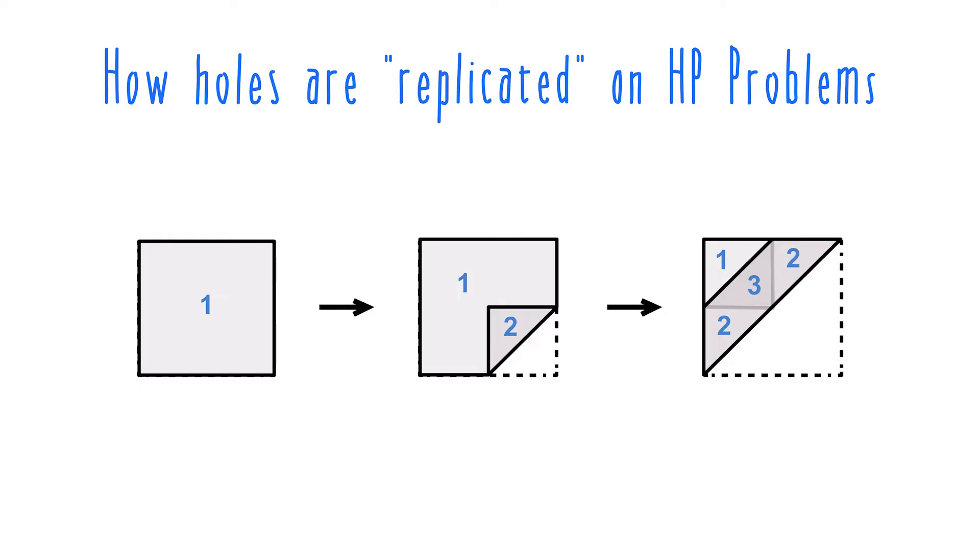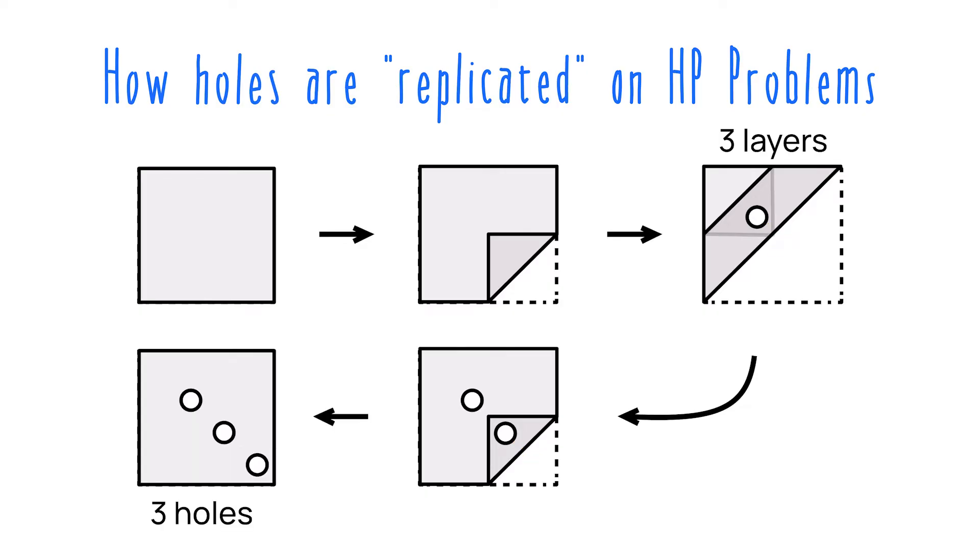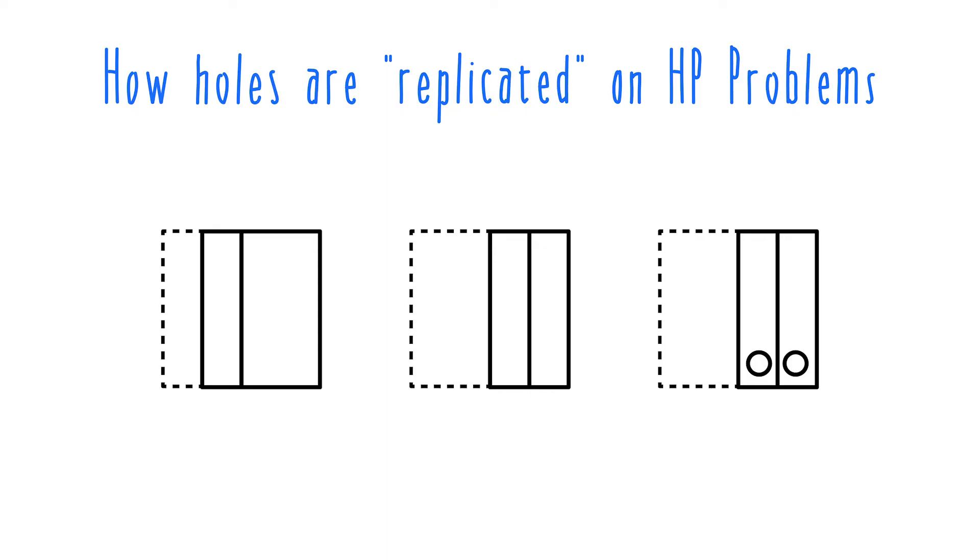The reason you can end up with multiple holes from a single hole punch is because that hole punch is going through multiple layers of paper. In fact, however many layers of paper it goes through, that will be how many holes you end up having at the end. Though we don't really recommend this being your main strategy for analyzing hole punching problems, it's a really important fact to keep in mind that can help you eliminate answer choices on trickier problems. What we do recommend as your main strategy is to just follow the holes through each step as the paper unfolds.